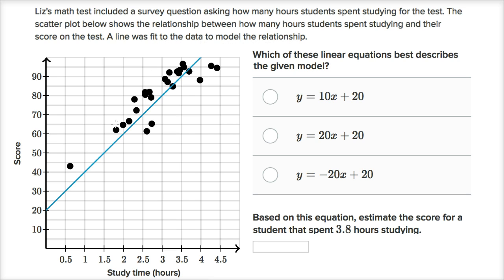They don't tell us how the line was fit, but this actually looks like a pretty good fit if I just eyeball it. Which of these linear equations best describes the given model? This point right over here shows that some student, at least self-reported, they studied a little bit more than half an hour and didn't actually do that well on the test. Looks like they scored a 43 or 44 on the test.